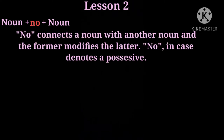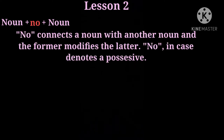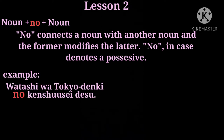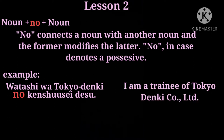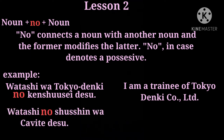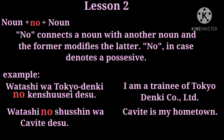Noun plus no plus noun: no connects a noun with another noun, and the former modifies the latter. No in this case denotes a possessive. Example: Watashi wa Tokyo Denki no Kenshusei desu — I am a trainee of Tokyo Denki Corporation Limited. Another example: Watashi no shusshin wa Cavite desu — Cavite is my hometown, because shusshin means hometown or origin.